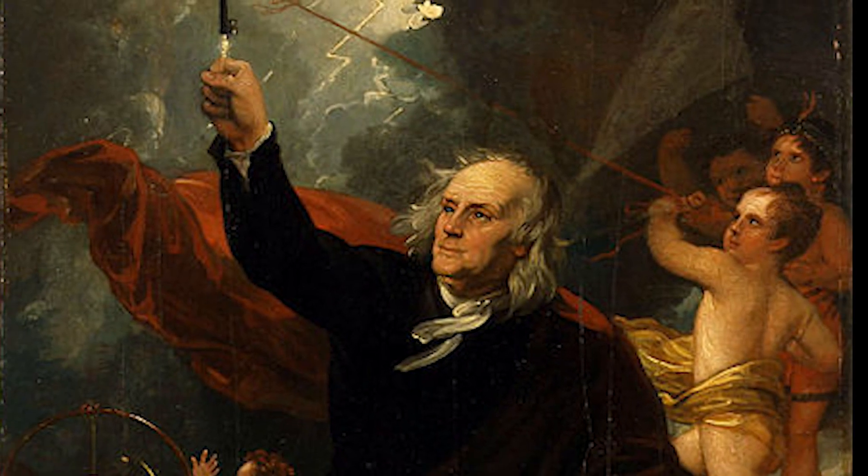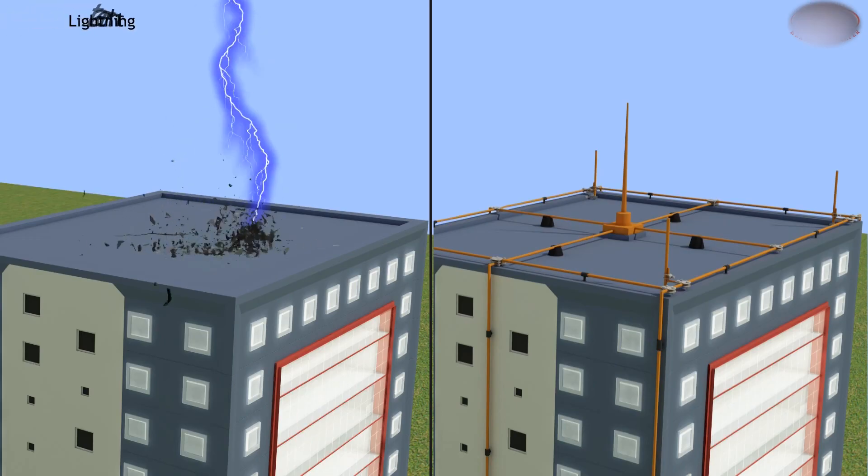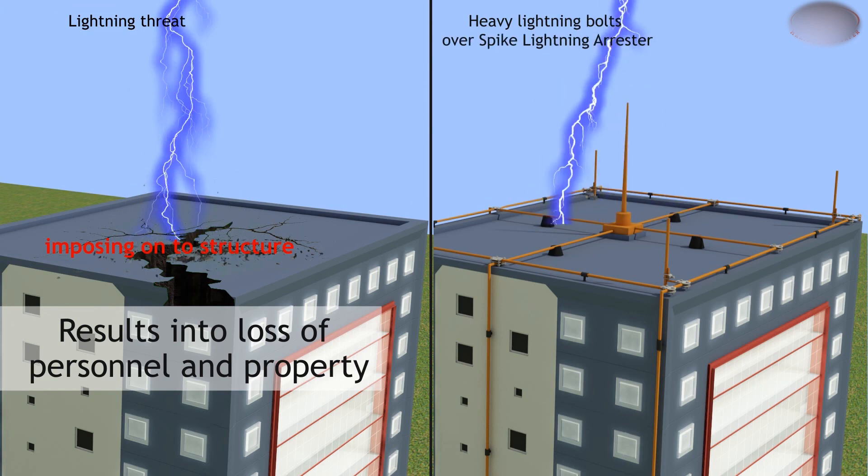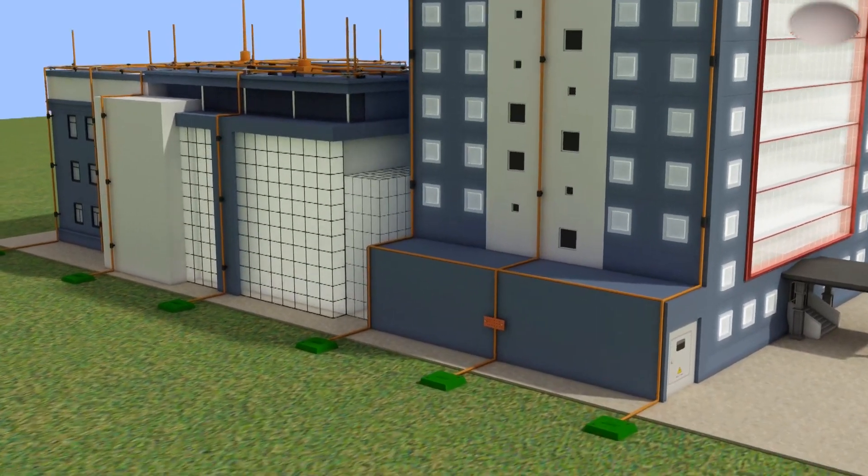Benjamin Franklin proved that lightning is a form of electrical energy. He also invented the lightning rod in the 18th century to protect buildings in the event of lightning.